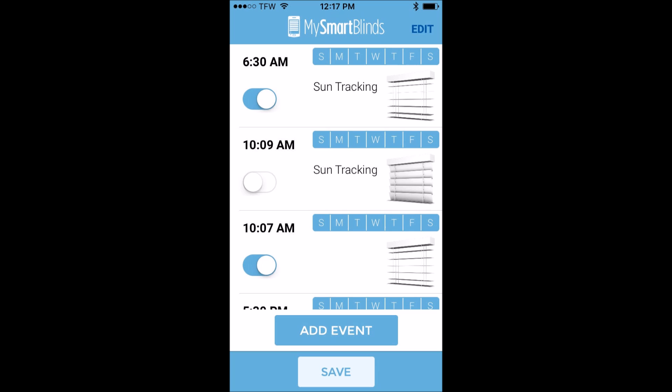In this next screenshot this is the main scheduling screen. This is where the magic of My Smart Blinds begins. In this screen you simply get a snapshot of the events that you programmed. When you programmed for the blinds to open, when you programmed for them to close, which events are active, and which ones you've made inactive, and for what days.